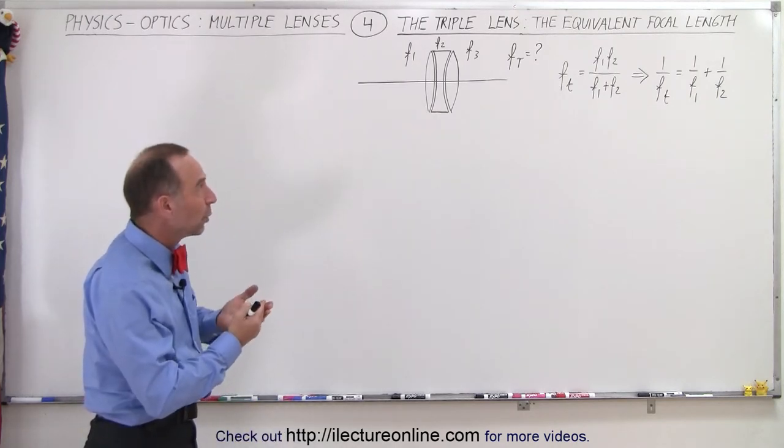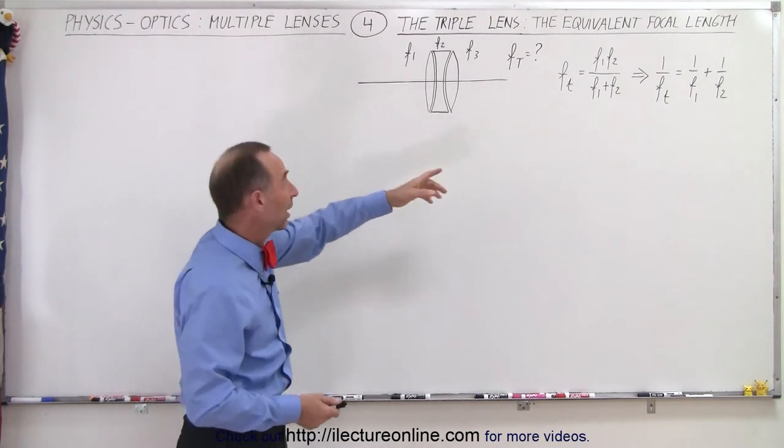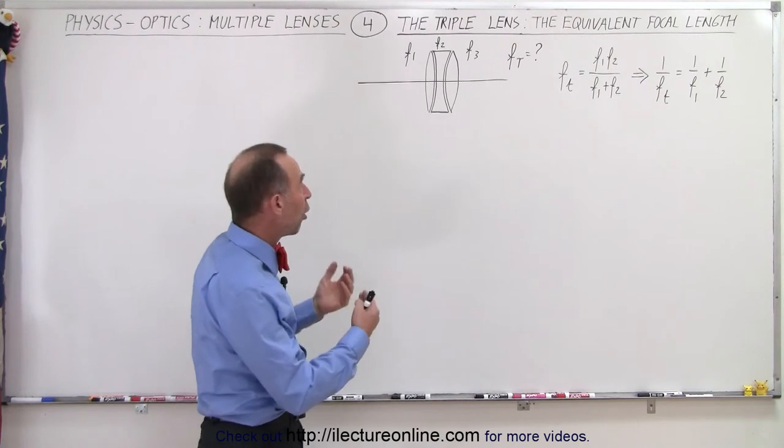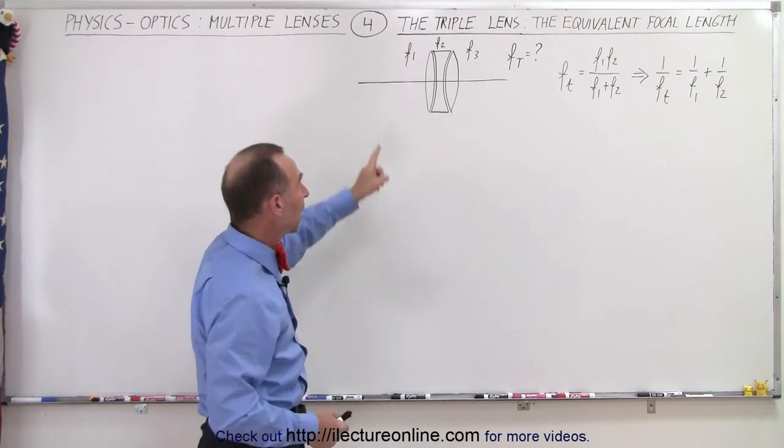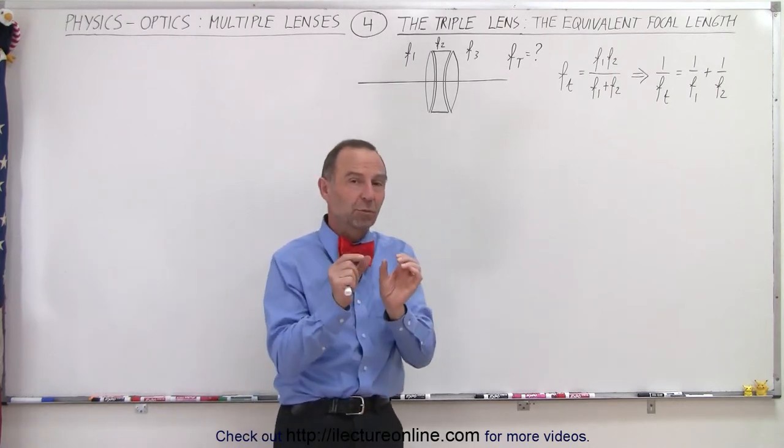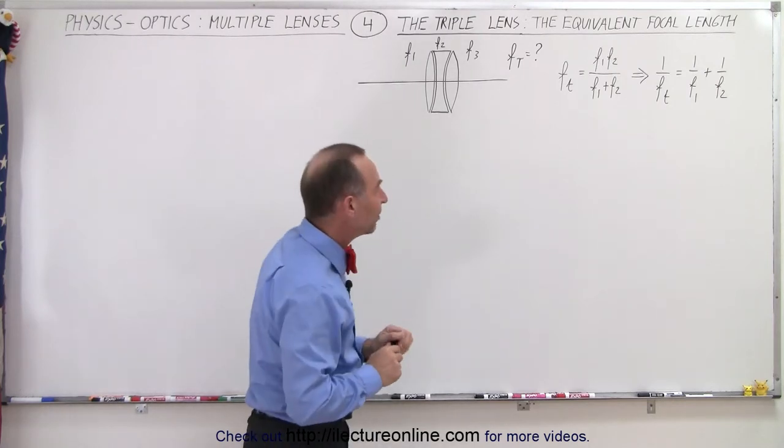How do we do that? Well here we have an example of what that might potentially look like. We have two converging lenses with a diverging lens in between. All three have different focal lengths, and we're trying to find the total or equivalent focal length of the three combined with the assumption that the distance between them is equal to zero.